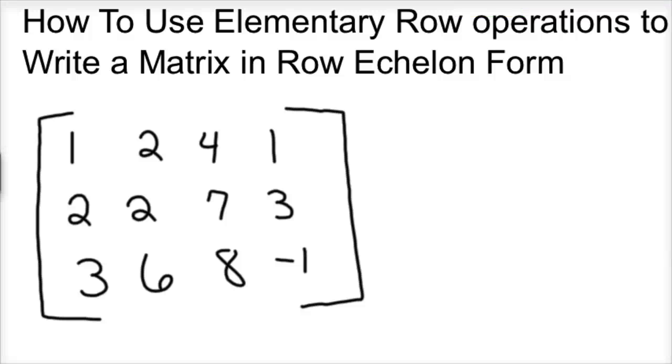Okay, how do you use elementary row operations to write a matrix in row echelon form? So what do all those words mean? First off, a matrix is just a set, an array of numbers. And here I have an example of a 3 by 4 matrix. So there's 3 rows and 4 columns of numbers. And each number is called an element in an array. So there's 12 elements in this particular matrix.